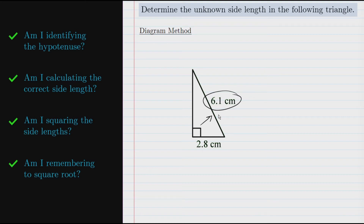Regardless of which method you use, I recommend that the first thing you do is identify the hypotenuse of the triangle. Here it's 6.1 cm — the side across from the right angle. Identifying the hypotenuse right away is important because it plays a significant role in how the solution unfolds. We've identified the hypotenuse, and notice that the side we're going to find is not the hypotenuse — so the second check is: am I calculating the correct side length?